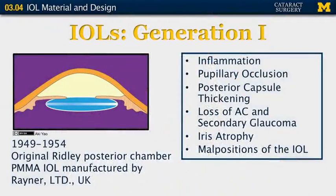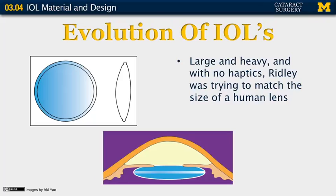This first lens lacked haptics and was associated with some problems. Patients tended to have chronic inflammation in the eye. Because it lacked haptics, there was occasionally occlusion of the pupil. There was significant posterior capsular thickening noted in many patients. Iris atrophy and general malpositions of the lens implant occurred over time. Here is a diagram showing the first Ridley lens — it is round and lacks haptics. The lens was also particularly heavy relative to a natural lens.